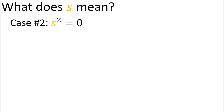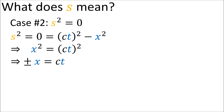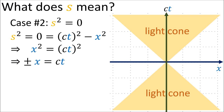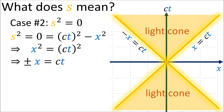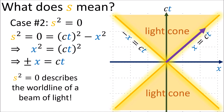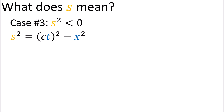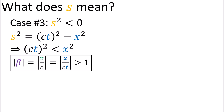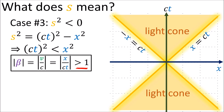When s squared equals zero, we have x squared equals ct squared, meaning ct equals plus or minus x — exactly the equations of beams of light. So s squared equals zero describes a vector pointing along the world line of a light beam. When s squared is negative, ct squared is less than x squared, meaning the vector's speed exceeds c. Such a vector has a slope more horizontal than a light beam and exists outside the light cone in a spacetime diagram.